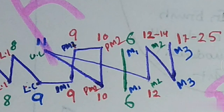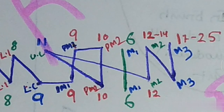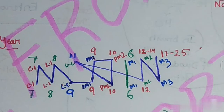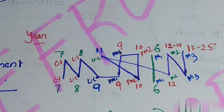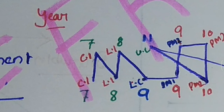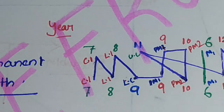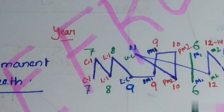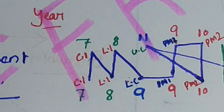The first permanent tooth to erupt is the first molar at six years of age. This sequence is remembered by the mnemonic MAIN — learn this pattern well so you can easily calculate eruption ages. Next, the central incisor erupts at seven years and the lateral incisor at eight years of age.